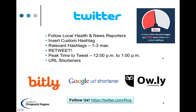For Twitter, I would recommend that state associations follow your local health and news reporters. You can share your custom press releases with them, and we're happy to help you customize anything, including your custom hashtag. Peak time to tweet is between 12 p.m. and 1 p.m. On Twitter you have 140 characters to work with, which means if you want to include a hyperlink, you'll need to shorten it. Here are three URL shorteners: Bitly, Google URL Shortener, and Owly, which is a platform through Hootsuite.